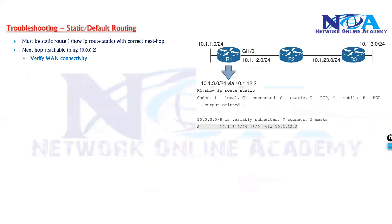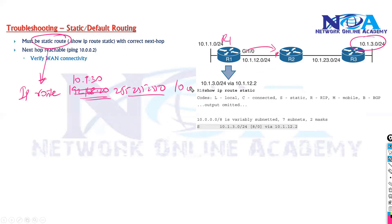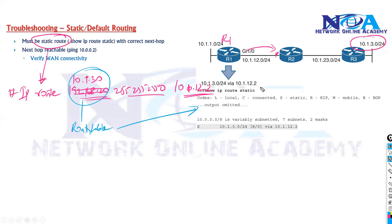When troubleshooting static routing, we need to know the configuration — how to configure static routes. We use the command 'ip route' followed by the destination network ID, for example 10.1.3.0, then the subnet mask (assuming /24), and then the next hop IP address, for example 10.1.12.2. After configuration, the router writes this entry into the routing table, which we can verify using 'show ip route', and we should see a static route entry.